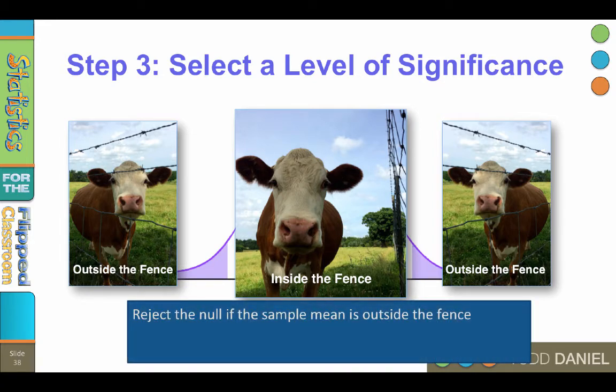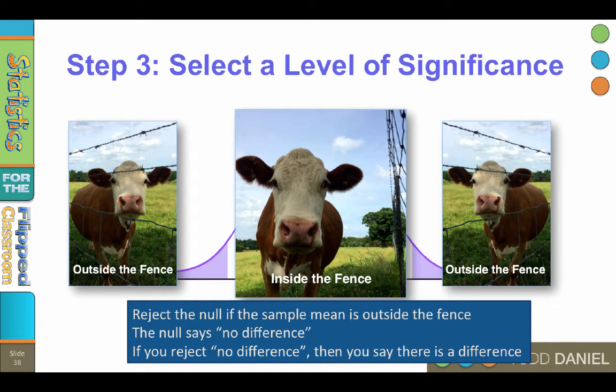You should reject the null hypothesis if the sample mean is outside of the fence. The null hypothesis says that there is no difference between the sample mean and the population mean. If you reject the idea that there is no difference, what are you saying? You are saying that there is a difference. Now that is the logic of hypothesis testing. That is what you must get your mind wrapped around. The null hypothesis says there is no difference. If you reject the idea that there is no difference, you are saying that there is a difference.